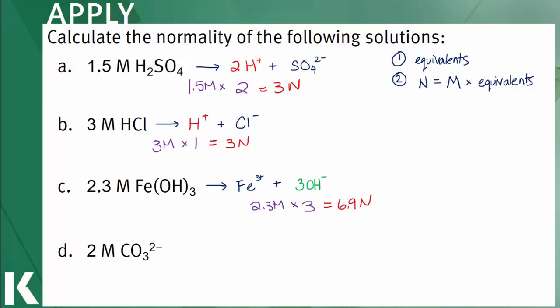Finally, in D, carbonate is a weak base and can react with two water molecules to form the diprotic carbonic acid and produce two equivalents of hydroxide ion. Two molar multiplied by two equivalents will equal a 4 normal solution.